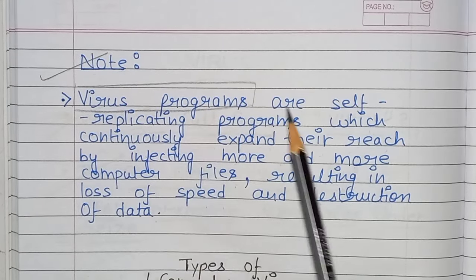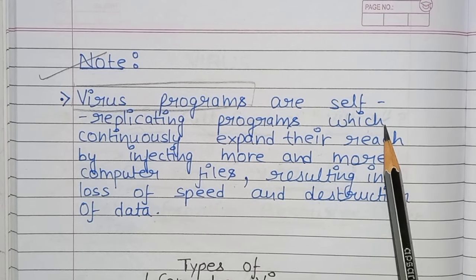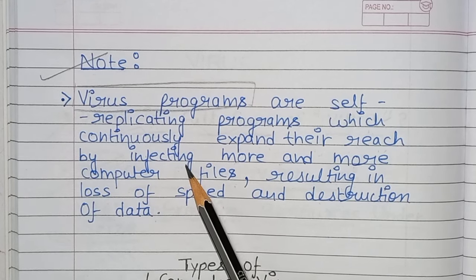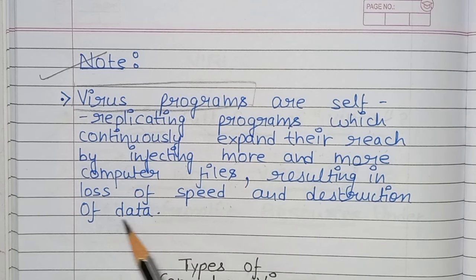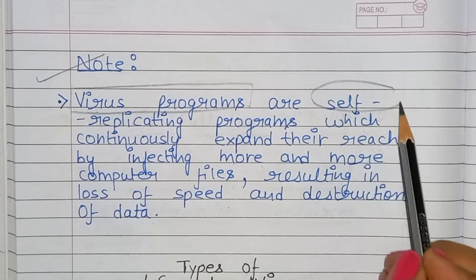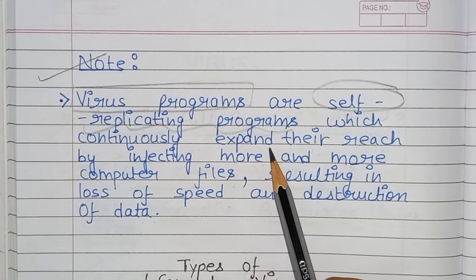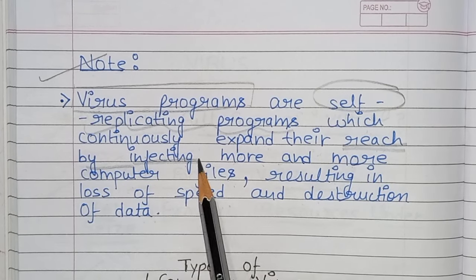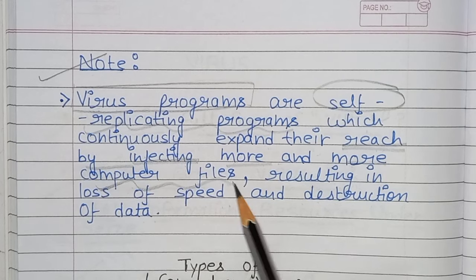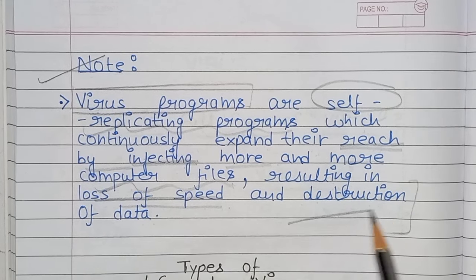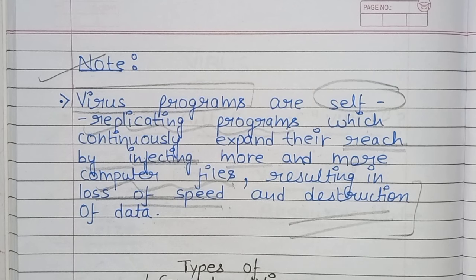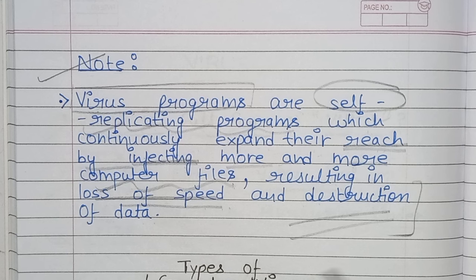Note: Virus programs are self-replicating programs which continuously expand their reach by infecting more and more computer files, resulting in loss of speed and destruction of data. These self-replicating programs increase their reach by infecting more computer files, which reduces the speed of the computer and the data is destroyed.